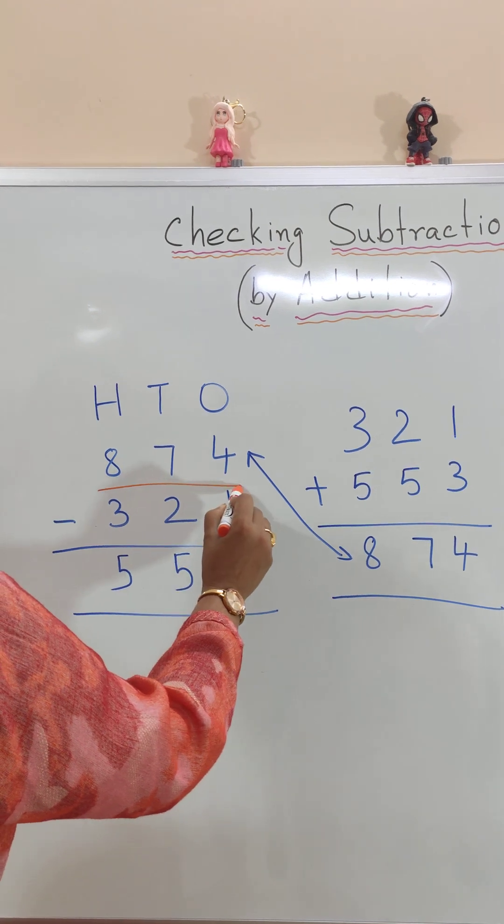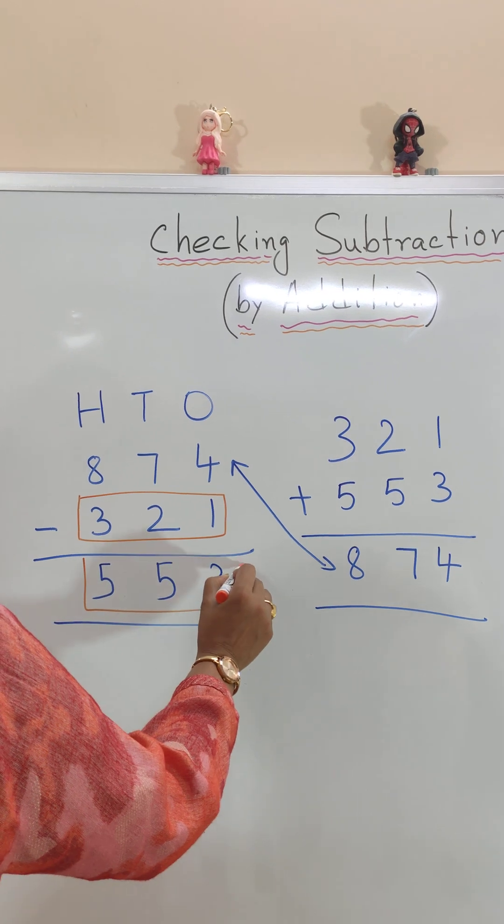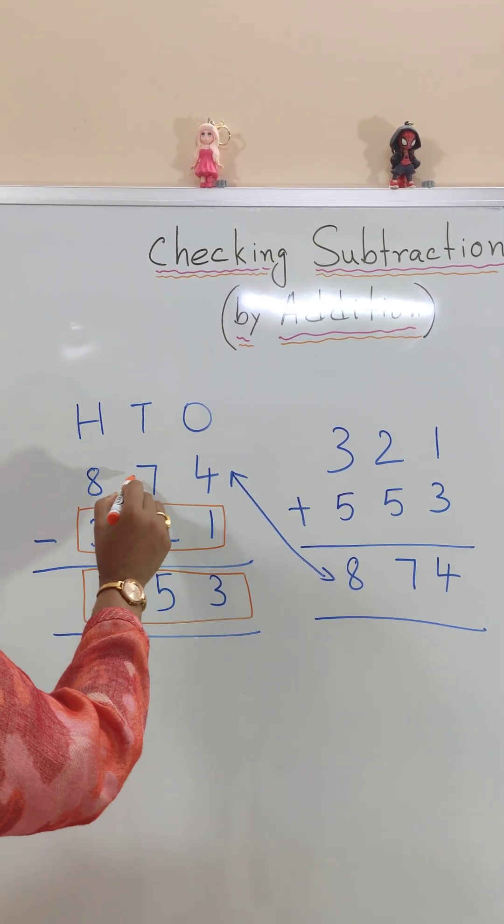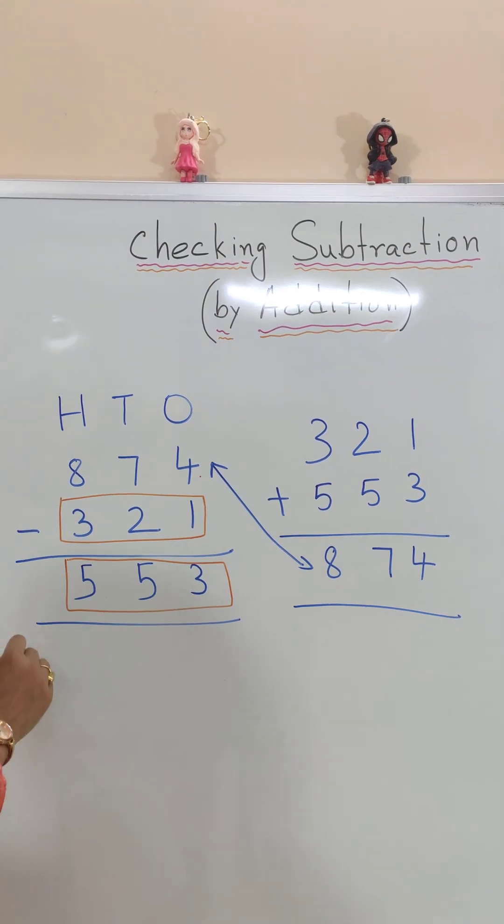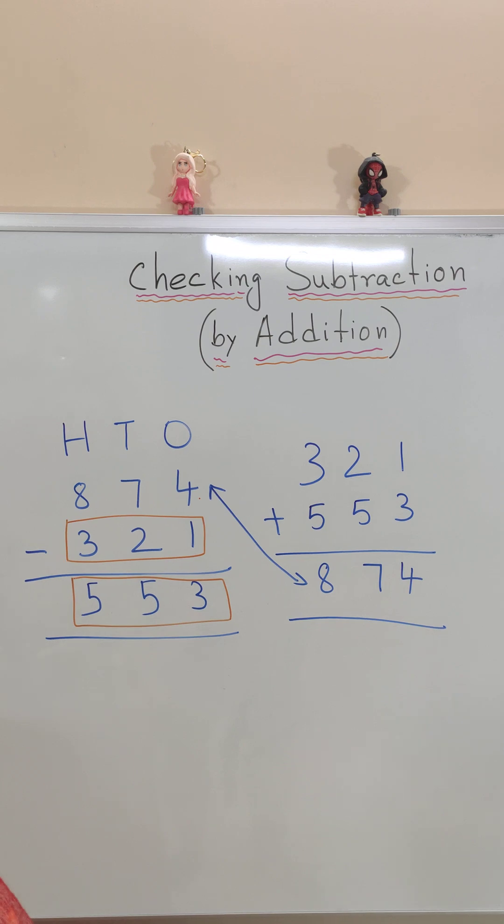So in short, if we add 321 and 553 and get the answer 874, then the subtraction is correct. Thanks for watching the video.